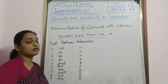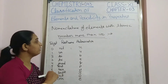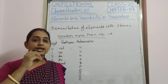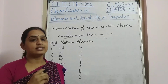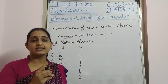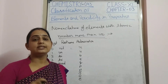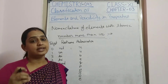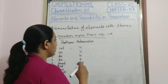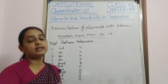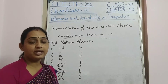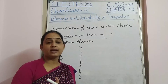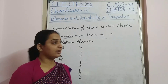Today's topic is the nomenclature of elements with atomic number more than 100. All the elements up to 100 have been named in the periodic table — for example, hydrogen, helium, lithium, beryllium, boron — all these have been discovered and named. But for elements with atomic number more than 100 which are yet to be discovered, scientists have named them according to a systematic method.